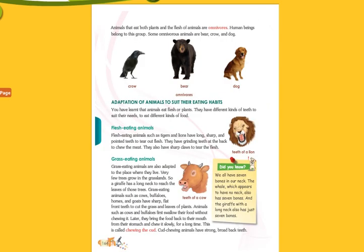We have learned about herbivores and carnivores. Now the next type is omnivores. Omnivores are animals that eat both plants and the flesh of animals. Human beings also belong to this group because we eat vegetables and meat. Some examples of omnivore animals are bear, crow, and dog.